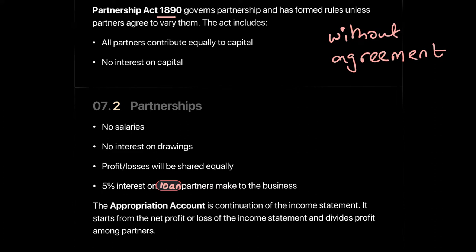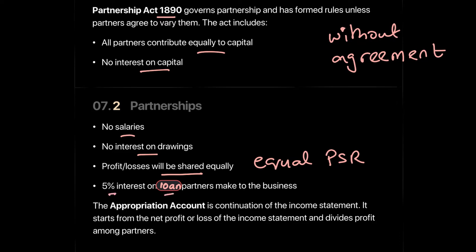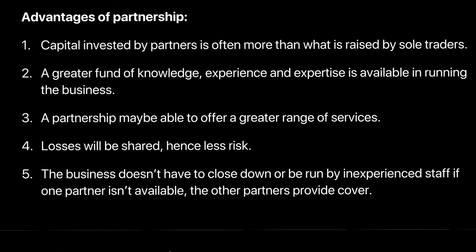Under the Partnership Act of 1890: all partners must contribute equally to capital; there will be no interest on capital, so no partner is compensated for their capital contribution; no salaries will be paid; there will be no interest on drawings; profits and losses will be shared equally. There will be a five percent interest on loan — if you've given a loan to the partnership you will receive five percent interest on it.